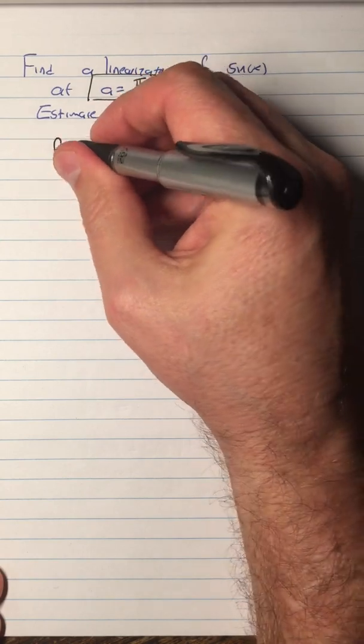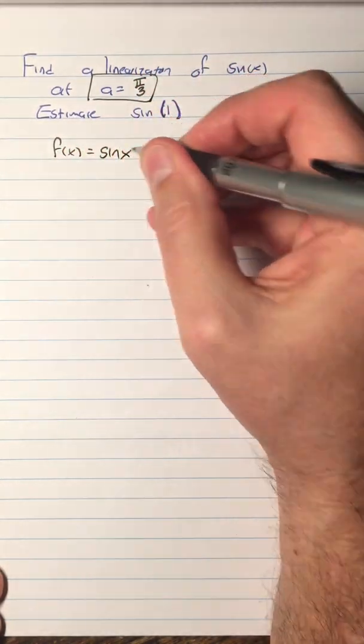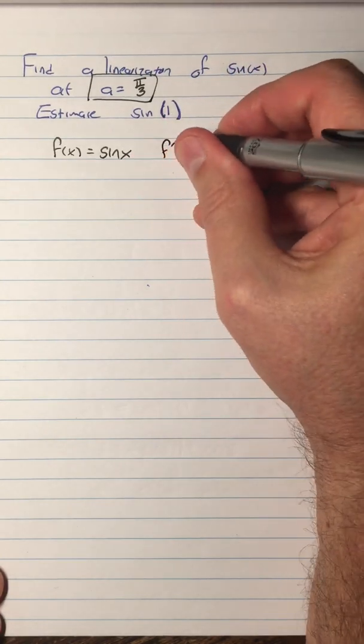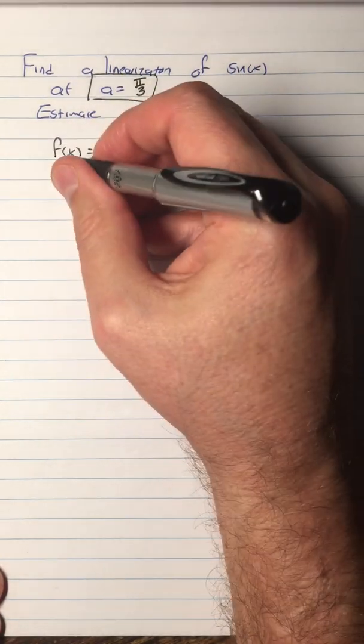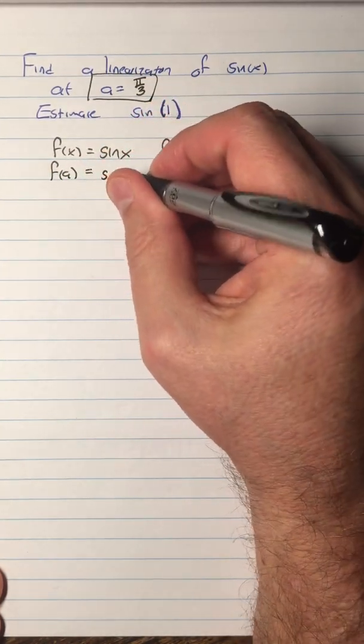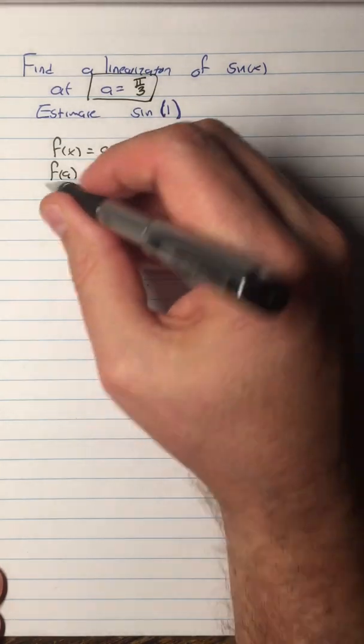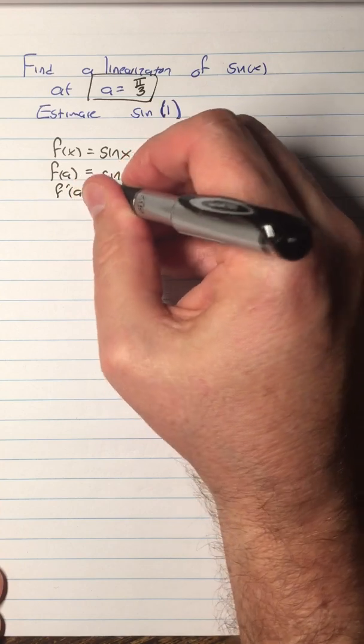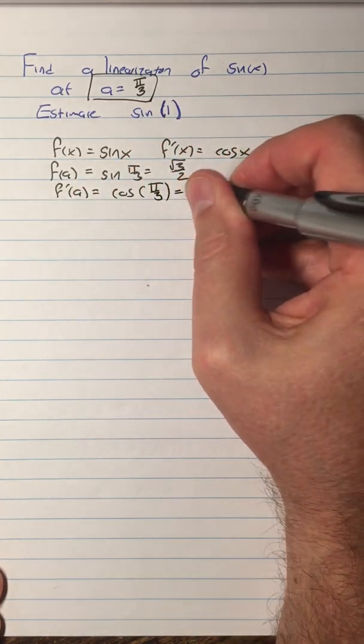What is f(x) here? f(x) is the function you're doing, so it's sin(x). So we need to know also f'(x), that is cos(x). We need to know f(a), that is the sine of π/3, so it's √3/2. We need to know f'(a), so that's cosine of π/3, so it's 1/2.